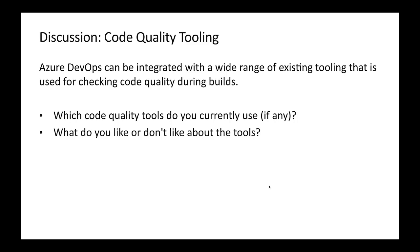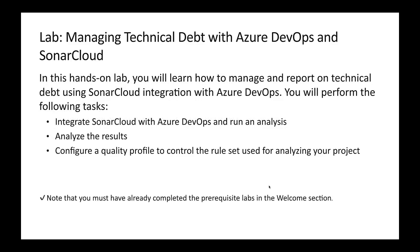Before implementing any code quality tooling, you need to discuss with your project managers and DevOps team about what current tools you are using, what is best for your project, and agree on standards as a combined effort. In the lab we will see how to install SonarCloud, create API keys, integrate Azure DevOps with SonarCloud, and other related steps. Until then, if you have any doubts, please reach out.